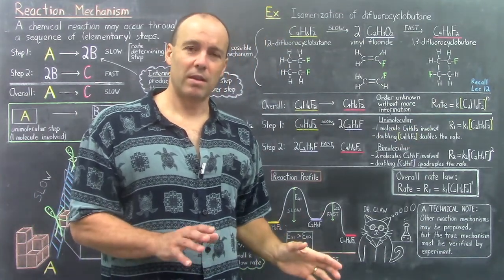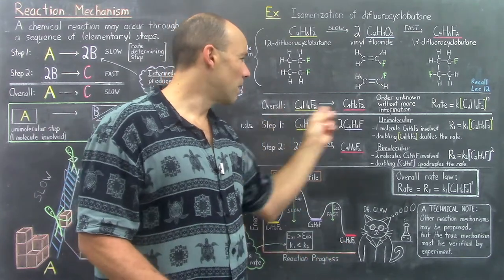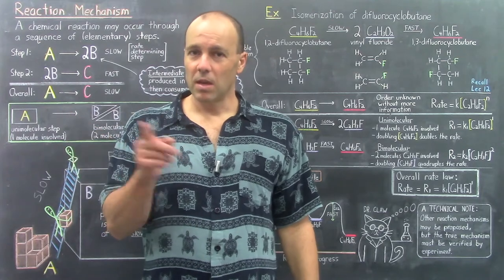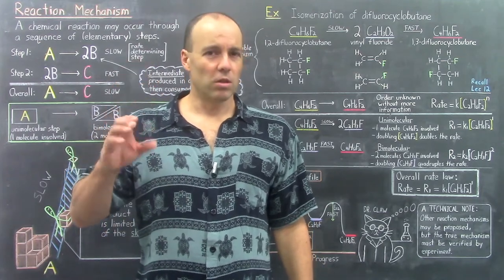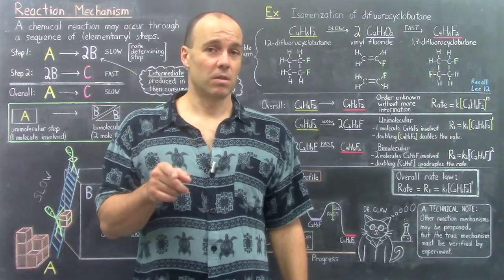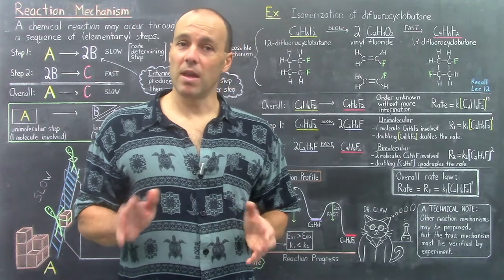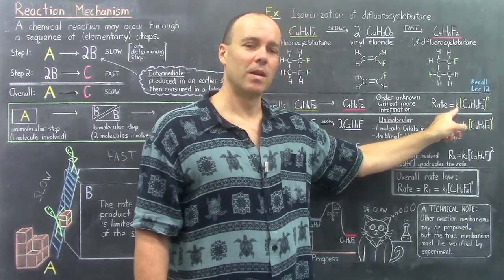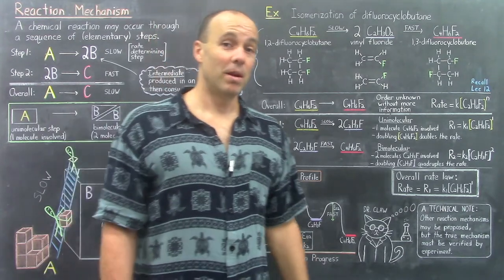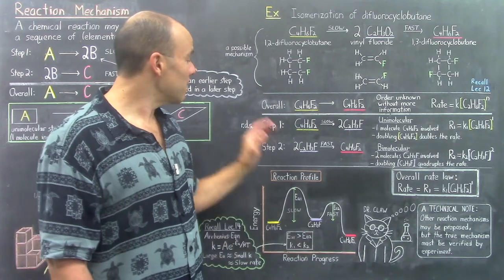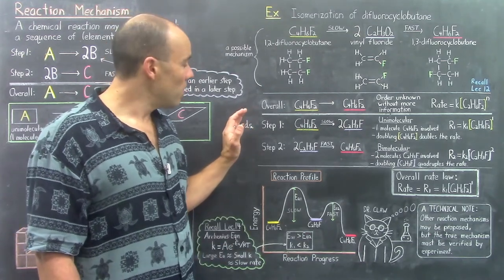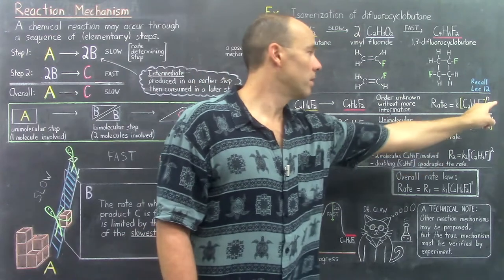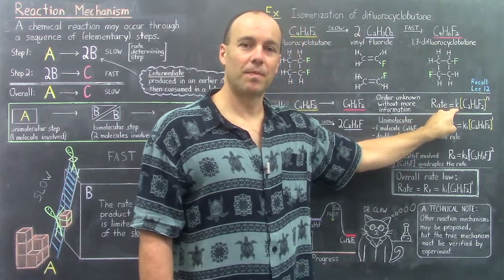The way you solve for the rate law experimentally is to study the reaction in the laboratory multiple times, each time changing the concentration of the reactant and measuring how fast it goes. With all of that data you're able to calculate the order and the rate constant. But there's an alternative way to get that information — by knowledge of the mechanism. If you know the mechanism and which step is rate-determining, then you can figure out the order and gain knowledge about the rate constant.